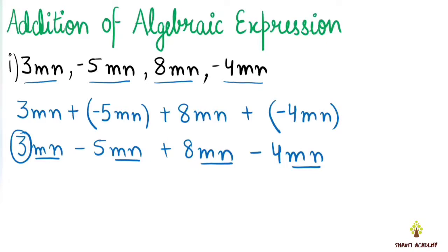The positive terms are 3mn and 8mn. We add them: 3 plus 8 gives us 11mn.